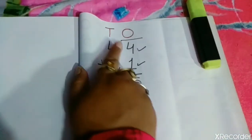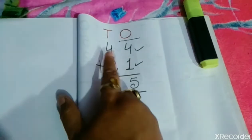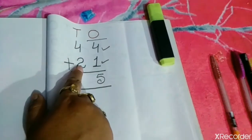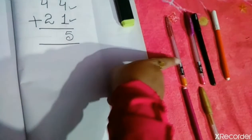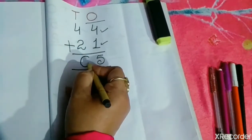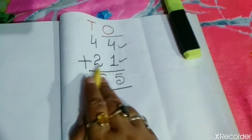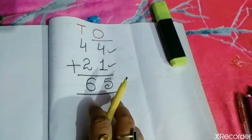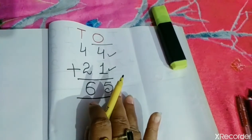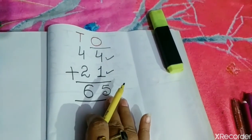Now, the tens column. The first digit is 4, so take 4 pens: 1, 2, 3, and 4. The other digit is 2, so take 2 more pens: 1 and 2. Count together: 1, 2, 3, 4, 5, and 6 — total 6 pens. Our answer is 6. So the total answer is 65. 44 plus 21 is 65. I hope now you all are able to solve all questions of addition without carry over. Enjoy your day students, and please do your homework. Bye!